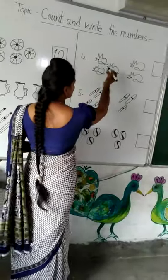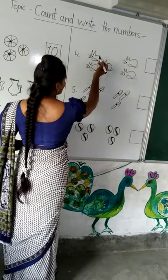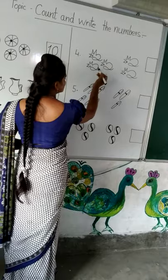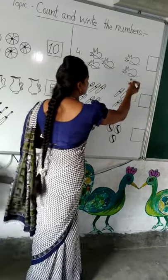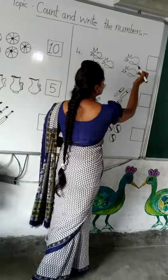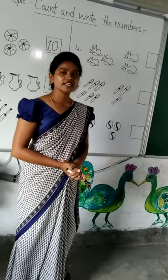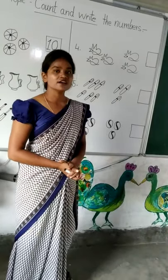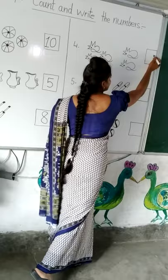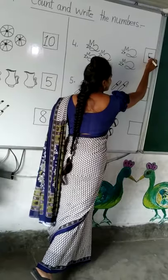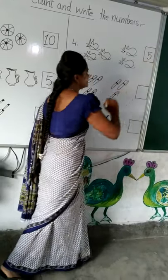Come to the fourth picture. We will count. 1, 2, 3, 4, 5. How many jets are there? There are 5 jets. We can write 5 in the box. That is it.